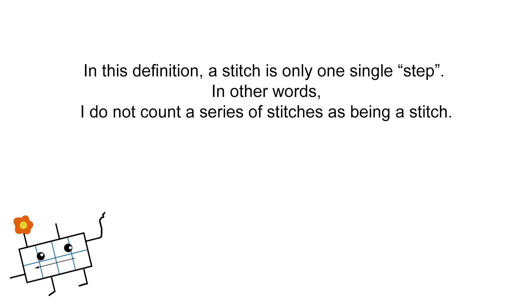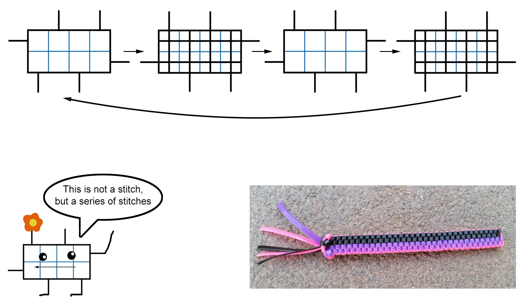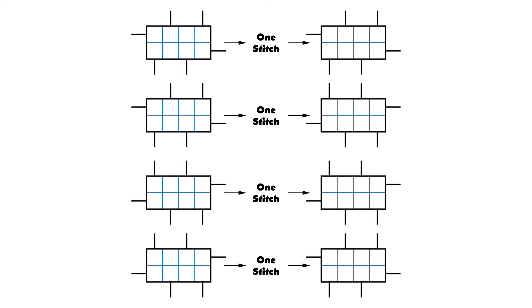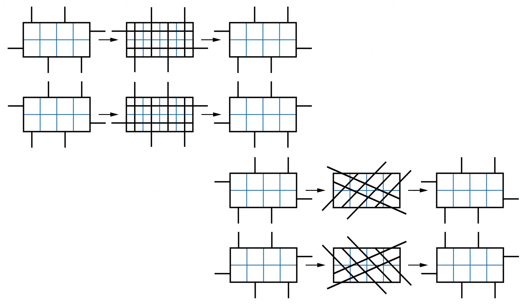I do not count a series of stitches as being a stitch. For example, a brick stitched keychain is not a stitch, rather it's a series of alternations of right and left handed brick stitches. Speaking of series, any keychain or even any other ordinary lanyard is a series of stitches. However, as shown earlier, a stitch is preceded and followed by a starting position.